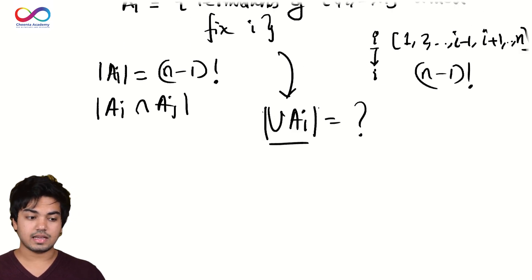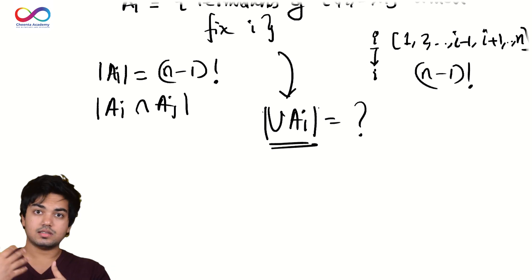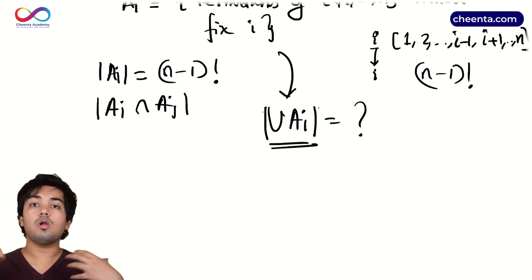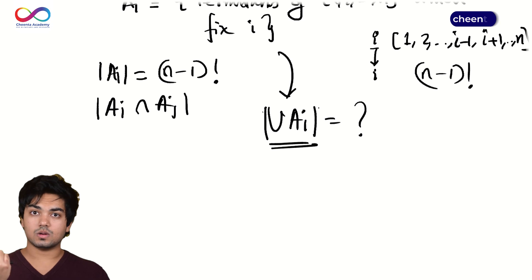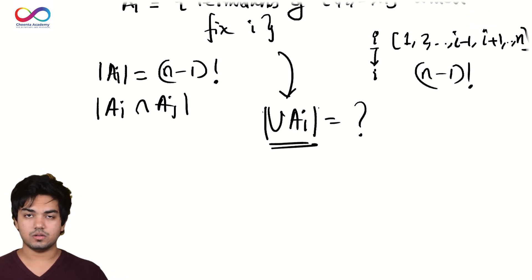So think about this logically. A_i consists of the permutations which fix i. So A_1 permutations which fix one, A_2 permutations which fix two. A derangement is a permutation which doesn't fix anything. So if I find this and subtract it from the total number of permutations, what is this union of A_i? The union of the A_i is all permutations that fix at least one thing, right? Permutations that fix maybe two things, three things, four things, but at least one thing. So the union of the A_i consists of all permutations that fix at least one thing. The exact complement of the set you're trying to count. So we'll just subtract from N factorial this number and this is the number of derangements.